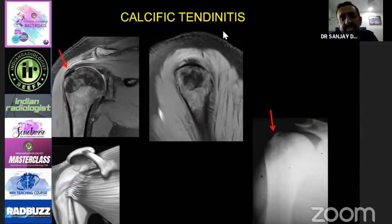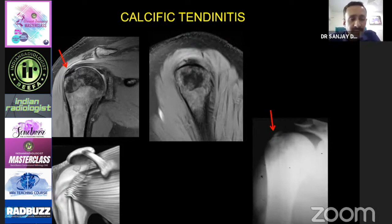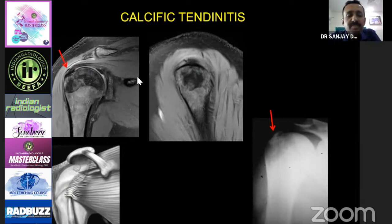Next is calcific tendonitis — note the use of 'itis' here. This is because there is inflammation due to deposition of calcification within the tendon substance, or the calcification has extruded into the subacromial space or subacromial bursa, inciting an inflammatory response. That is when it becomes painful and is called calcific tendonitis. When you do many rotator cuff ultrasounds, you will find calcifications in many people, but not all have tendinitis because not all have symptomatic calcifications — tendinitis only applies when symptoms are present.